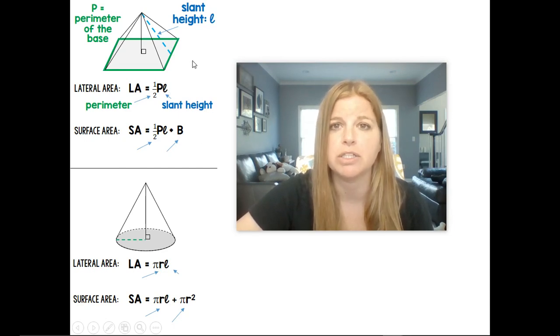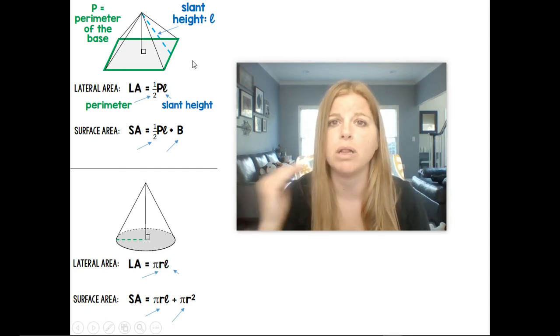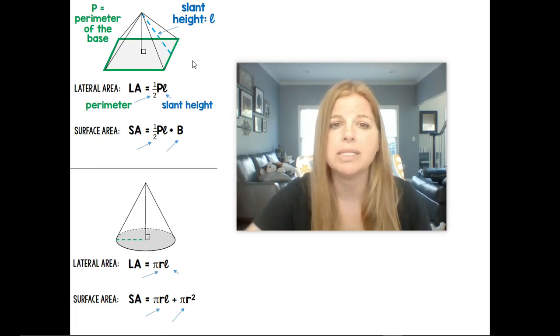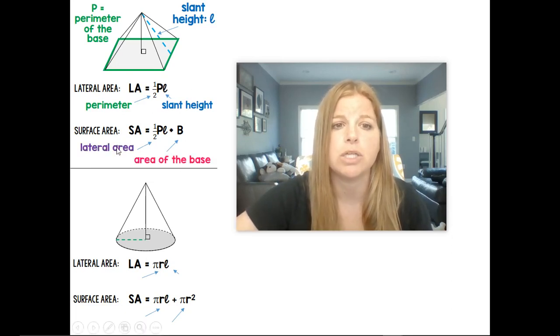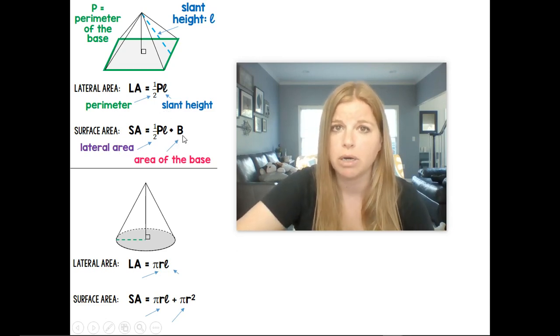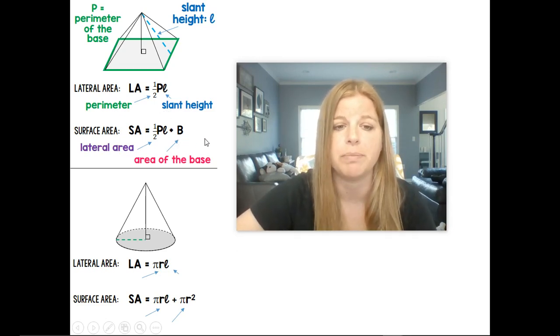Then when we want to get the surface area, the surface area is going to include all of the lateral area plus the area of the base. So it's the lateral area here plus capital letter B, which we already know in a previous formula, is for the area of the base.